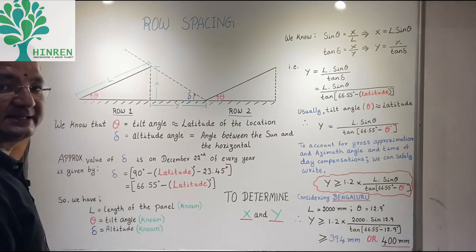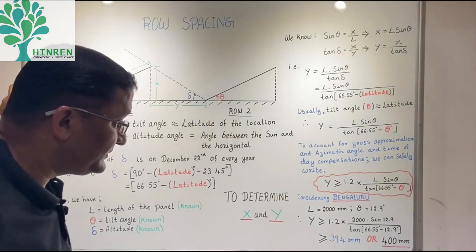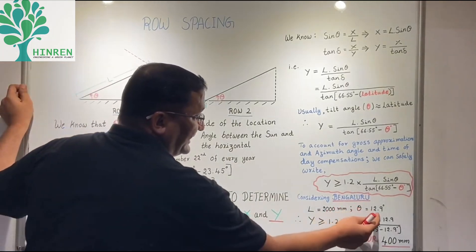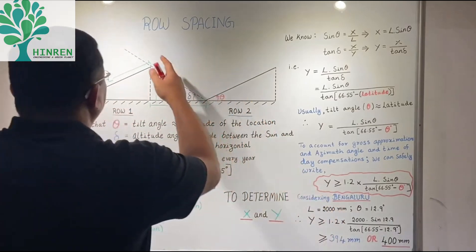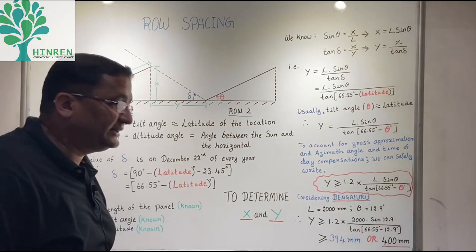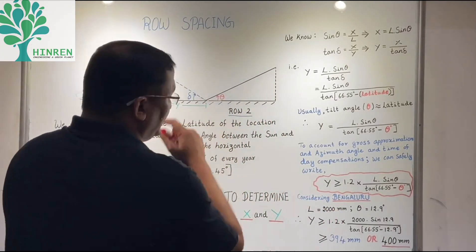Let us take an example of the city of Bangalore. Here we have the latitude angle of 12.9 degrees. We have the length of the solar panel as 2000 mm or 2 meters. We will determine the value y.